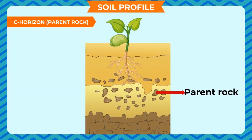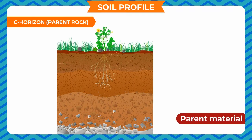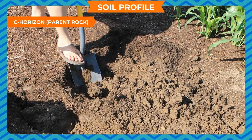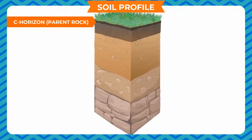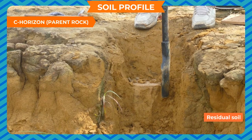C-horizon, Parent rock: This is the region below the subsoil and the lowermost layer of the soil. There is no organic matter in this layer. It contains parent material through which the soil is formed by the weathering process. This region is hard and cannot be easily dug. It stores water above it and makes the water table. This layer is also called substratum, and soil formed from it is called residual soil.